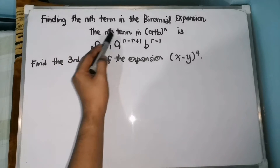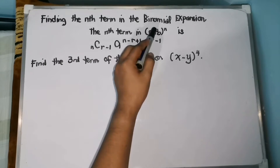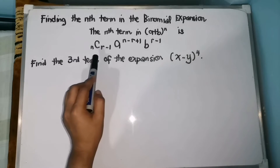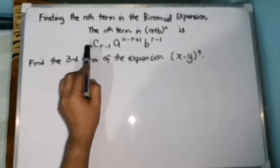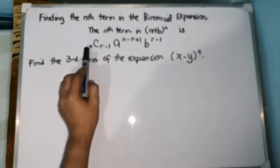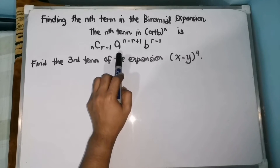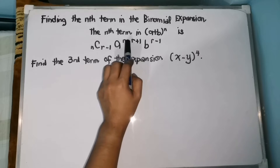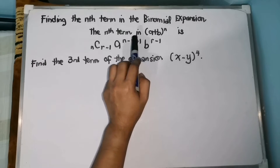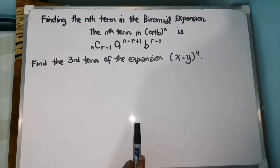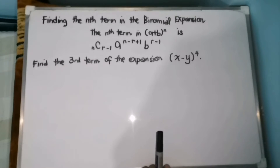The n-th term in the quantity a plus b raised to n is combination of n, r minus 1, times a raised to n minus r plus 1, b raised to r minus 1. So, as much as possible, memorize the formula.